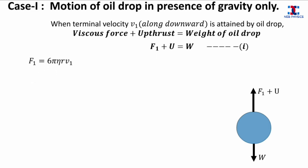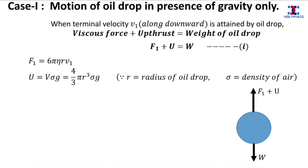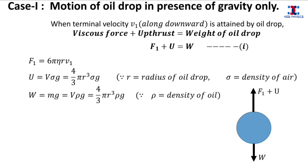The viscous force F1 equals 6πηrv1, where η is the coefficient of viscosity and r is the radius of the drop. The upthrust of air equals Vσg, where V is the volume of the drop, σ is the density of air, and g is acceleration due to gravity. Since the oil drop is spherical, its volume is (4/3)πr³. The weight of the oil drop equals mg, which can be written as Vρg, or further as (4/3)πr³ρg.